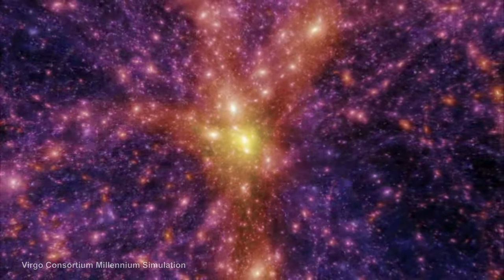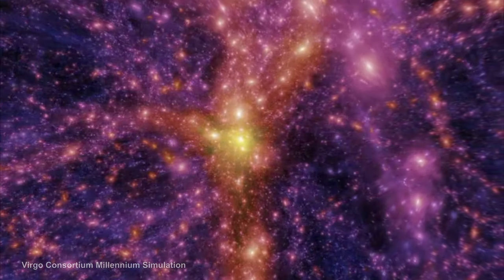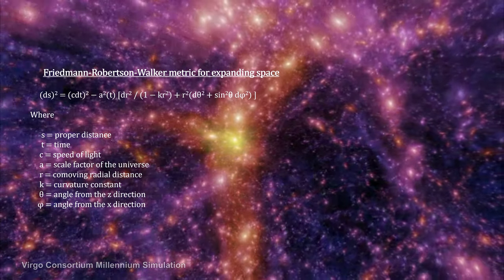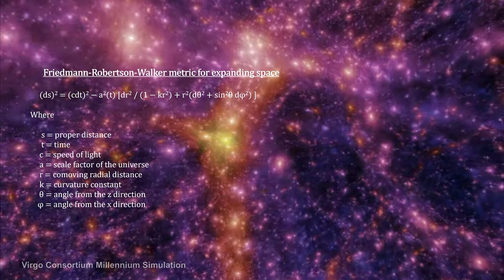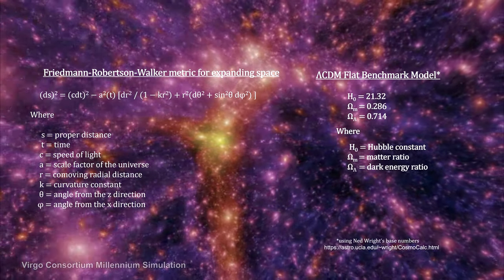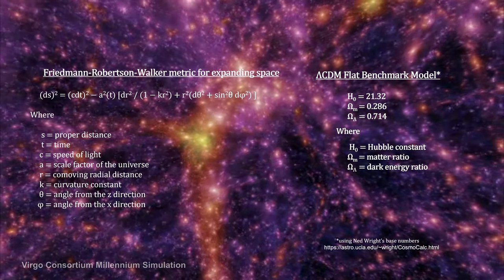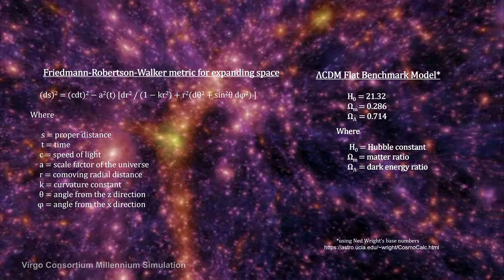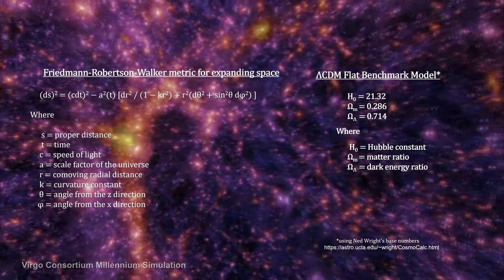At these distances, we need to take into account the expansion of the universe in order to determine how far away they are. For that, we use the Friedman metric. With this, and a stated set of coefficients for the flat lambda cold dark matter model, we get the galaxy's distance from us when the light we see started its journey, the distance the light traveled to get here, and the distance from us the object is now.